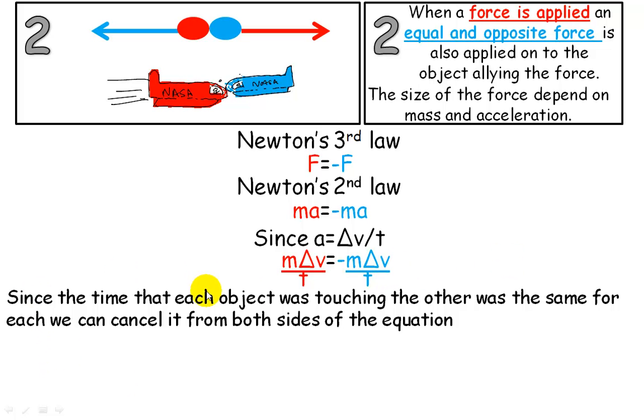The time that each object are touching each other is going to be exactly the same. So if this was two seconds, for instance, and two seconds, you could multiply both sides of the equation by two. Or you can just simply cancel out the t's, and it disappears from both sides of the equation. So we can express it like this.